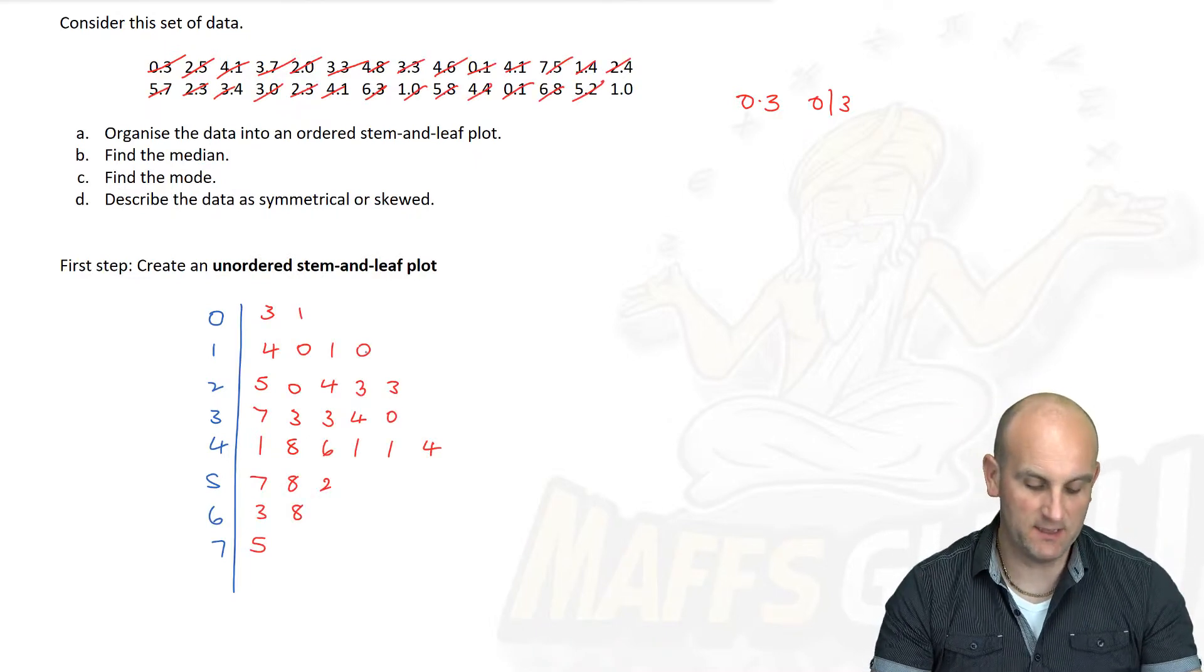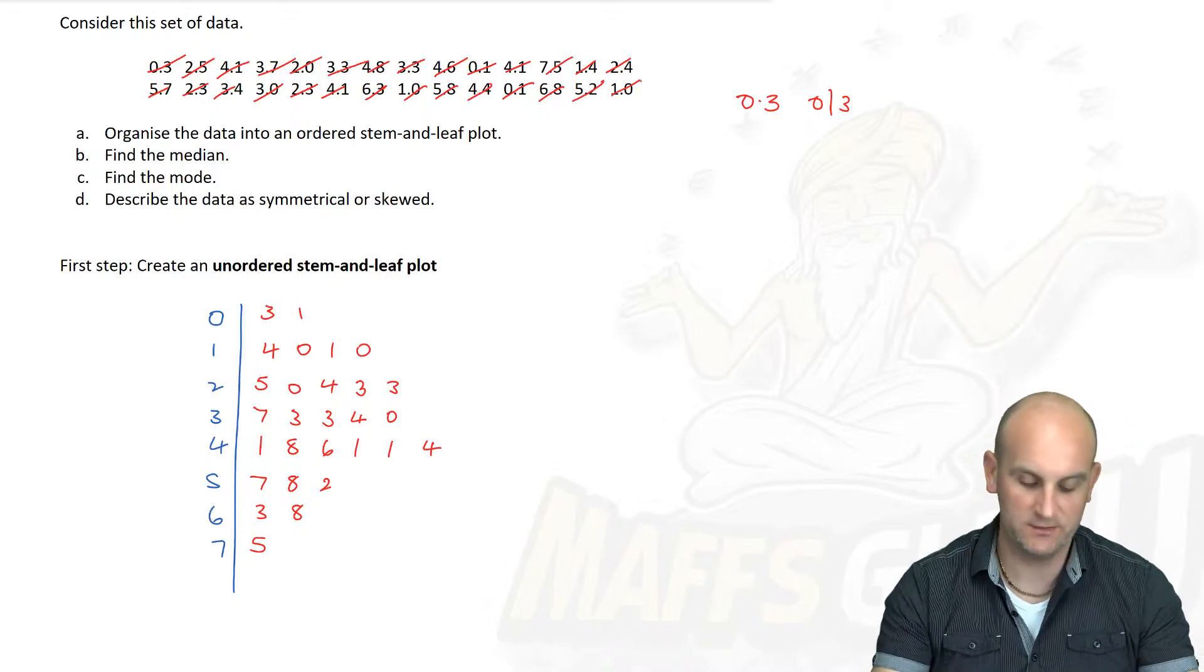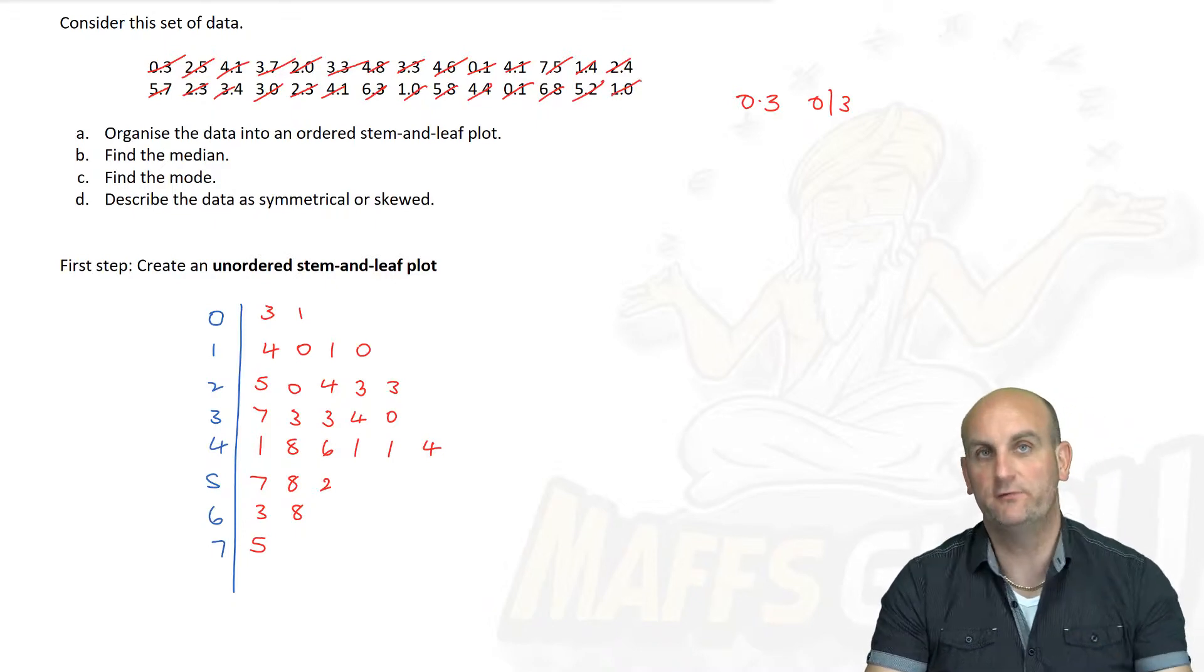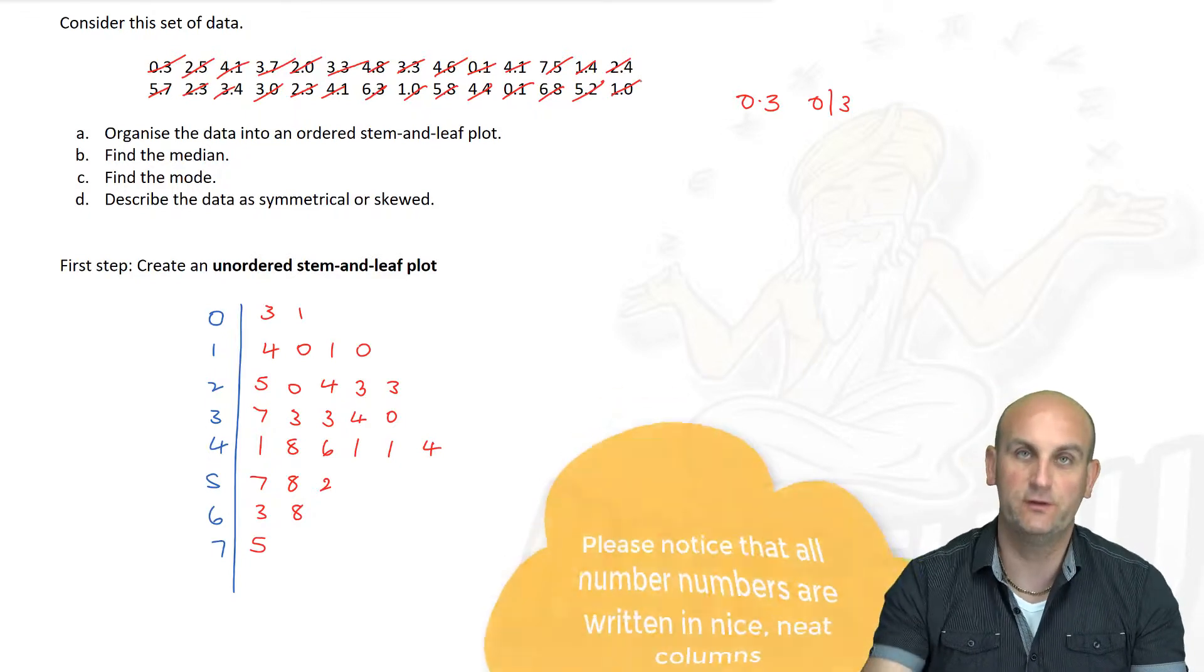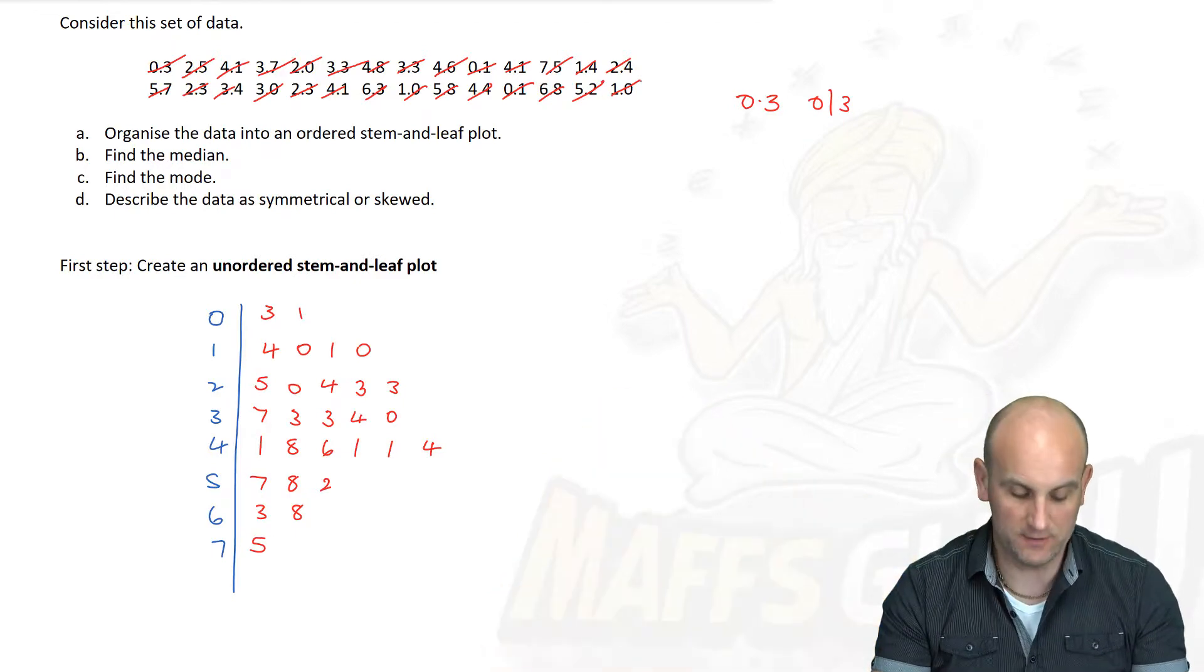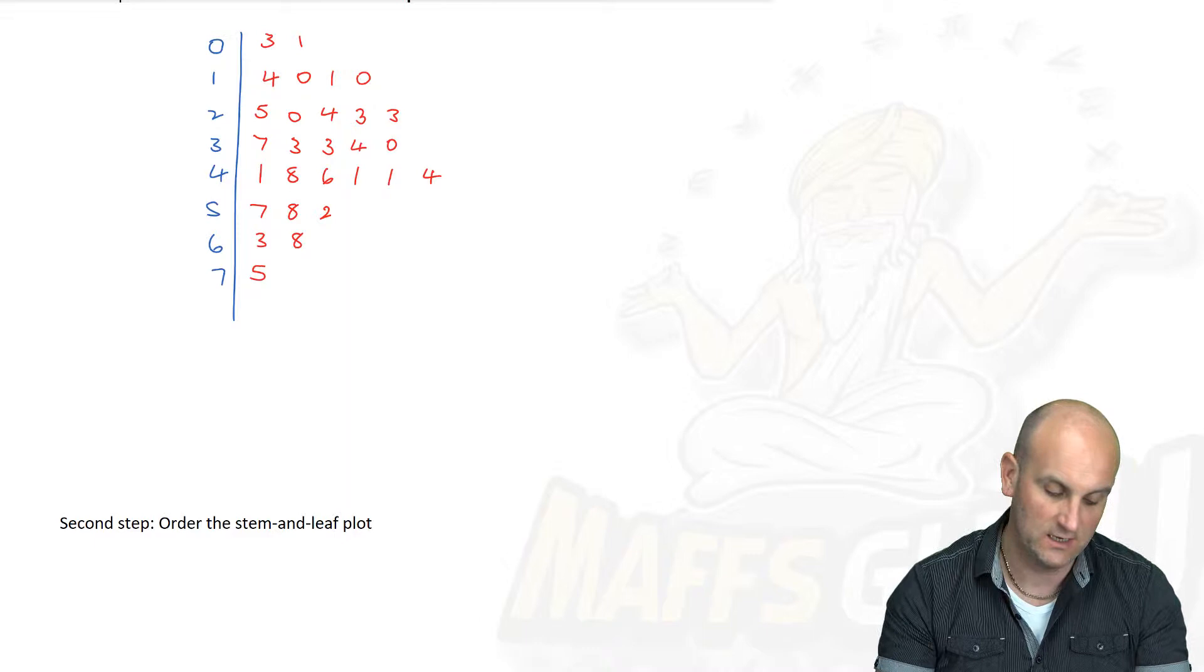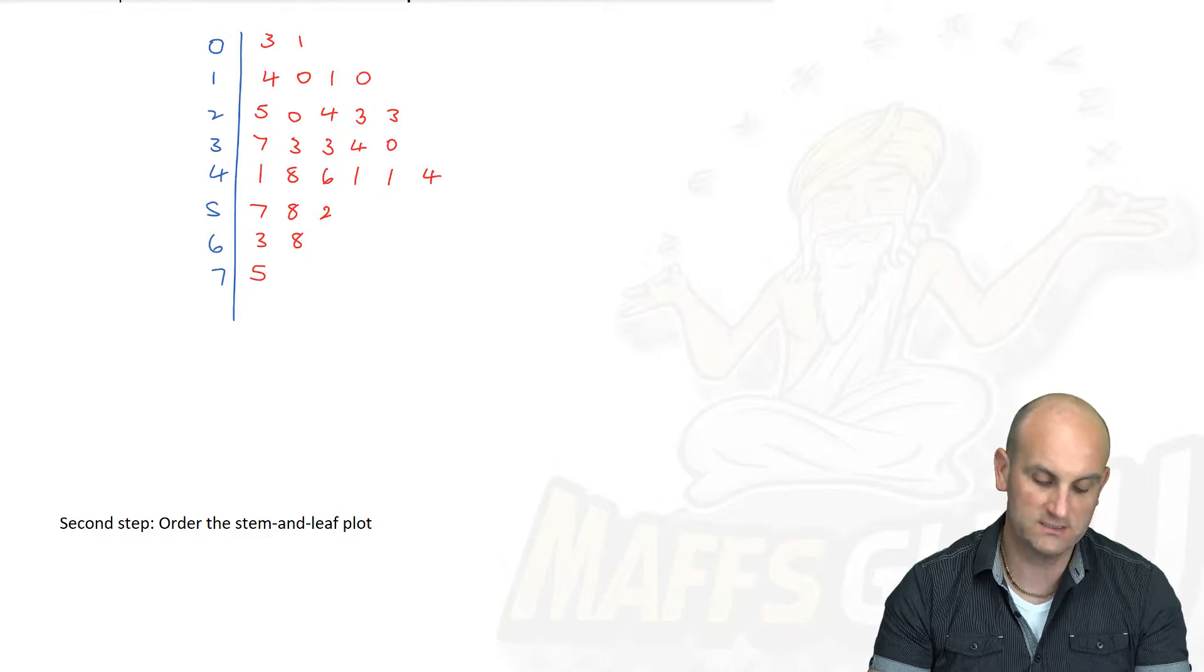There we go ladies and gentlemen. There is my completed unordered Stem and Leaf Plot. I've got all of my data in there. The reason it's unordered is if we read across those rows now, the numbers aren't in any particular order. So what do we now do? We now create an ordered Stem and Leaf Plot.